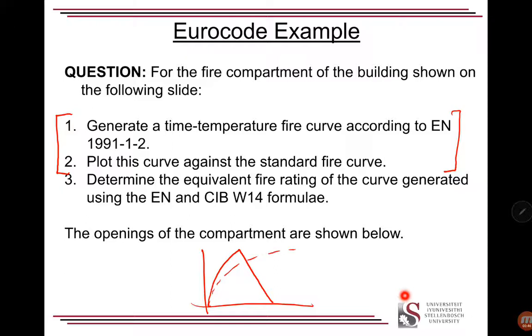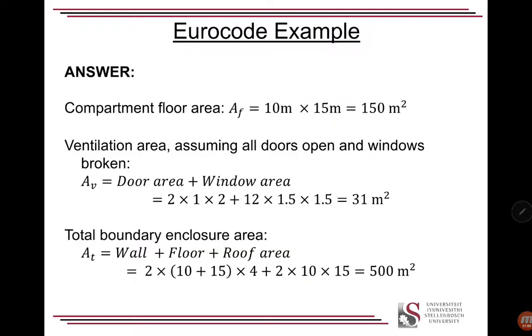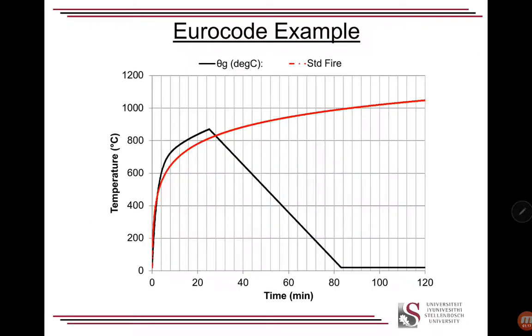And now we are going to determine the equivalent rating. So here is the enclosure. We've got two doors and twelve windows and various parameters. As I said, refer to the previous video which covers this example in more depth. Our floor area is 150 square meters, we've got 31 square meters of window, and a total boundary area of 500 square meters. That's wall, floor, and roof together, not excluding the window or the ventilation area. It's the total boundary area.